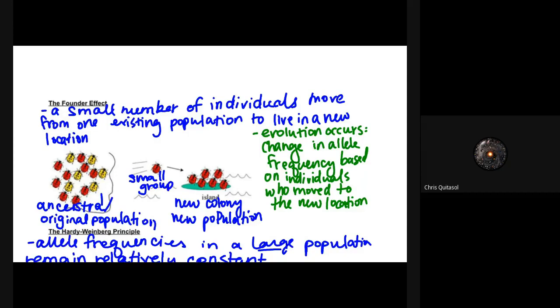When you think about that small group that moves to an island, if the small group happened to all be red in this example with these beetles, the new colony population, that allele frequency of that new population on the island will be drastically different than their ancestral or original population. So evolution occurs—change in allele frequency based on individuals who move to a new location. This founder effect is a form of evolution without natural selection.